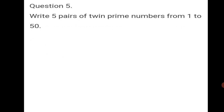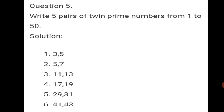Question 5: write 5 pairs of twin prime numbers from 1 to 50. The pairs are: 3 and 5, 5 and 7, 11 and 13, 17 and 19, 29 and 31, and 41 and 43. Six pairs are mentioned here — you can write any 5 pairs of your choice. All are co-prime numbers with a difference of 2, that's why they are twin prime numbers.